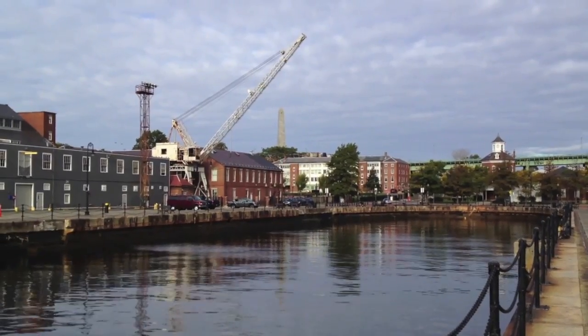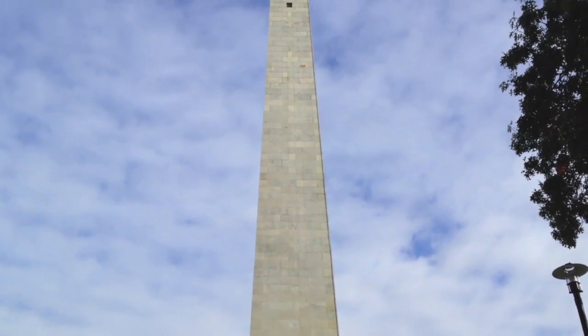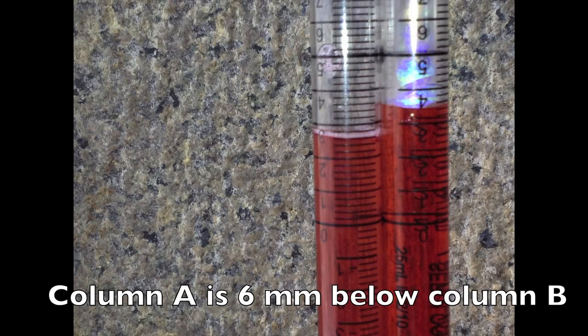But what's the pressure going to be up on Bunker Hill Monument? Well, let's find out. After climbing 275 stairs, we're able to take a measurement at the top of Bunker Hill Monument. Here, we're able to show that the column A is just 6 millimeters below column B.